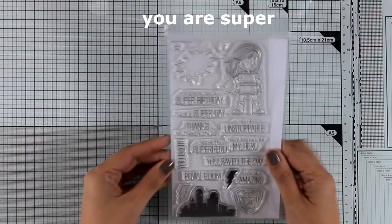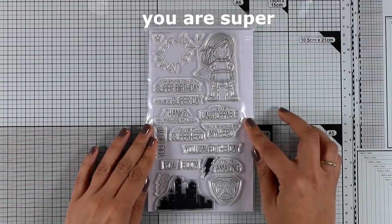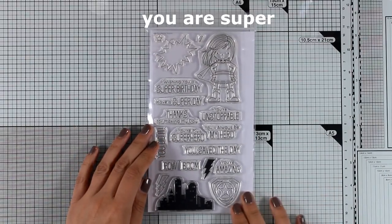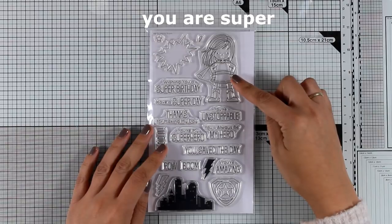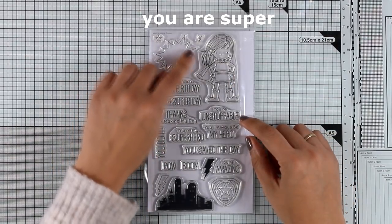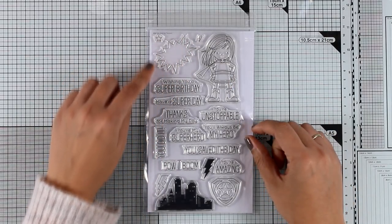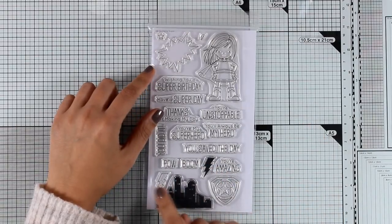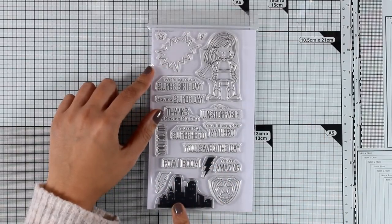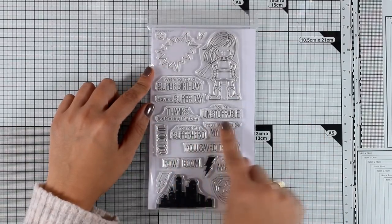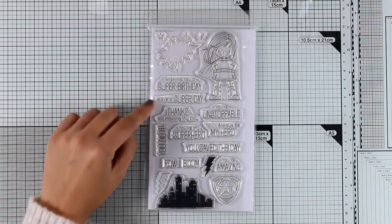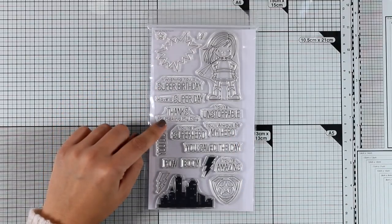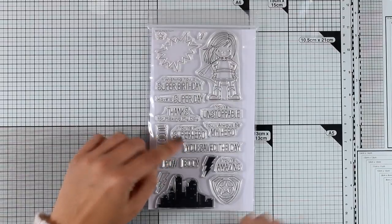And now let's go on to a stamp set that I'm sure is going to sell out super quickly. This is called You Are Super and it has this adorable little girl that is a superhero so you get lots of different props to create your lovely card along with a cityscape and many sentiments that go along with that such as wishing you a super birthday, have a super day,